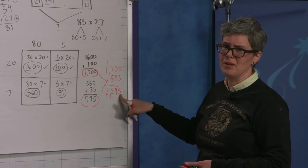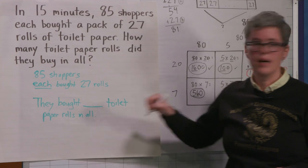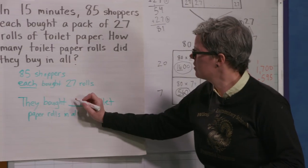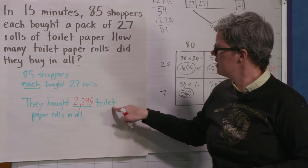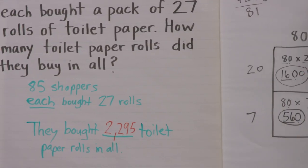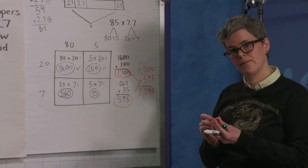Well, that's a lot of toilet paper. Let's come back over here and put it into our answer statement. They bought 2,295 toilet paper rolls in all. Double check. Got it. Okay. Thank you.